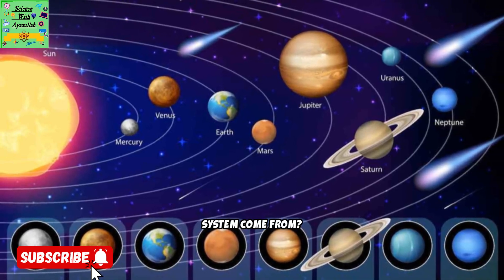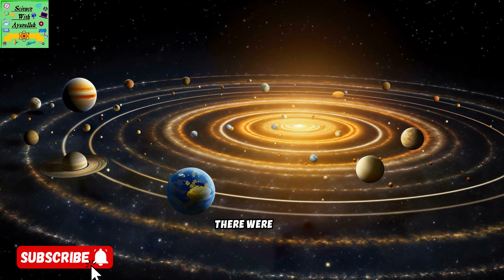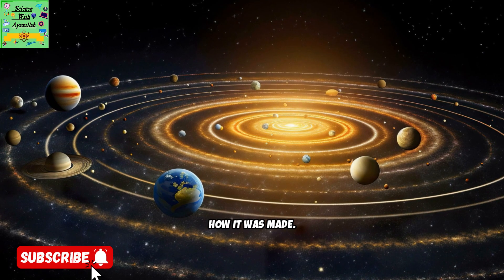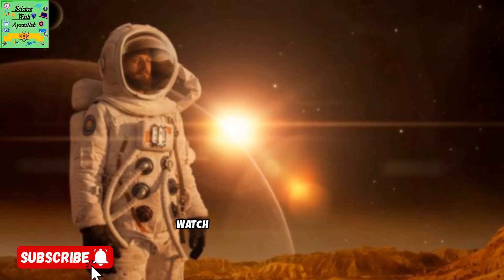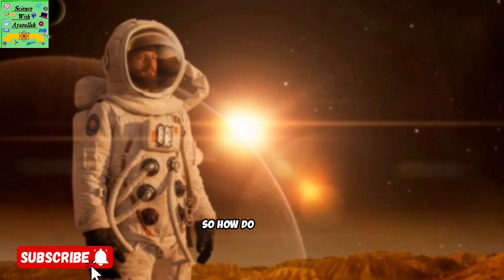Where did the solar system come from? When the solar system formed, there were no people to observe how it was made. Observe means to watch something happening. So how do we know what happened?